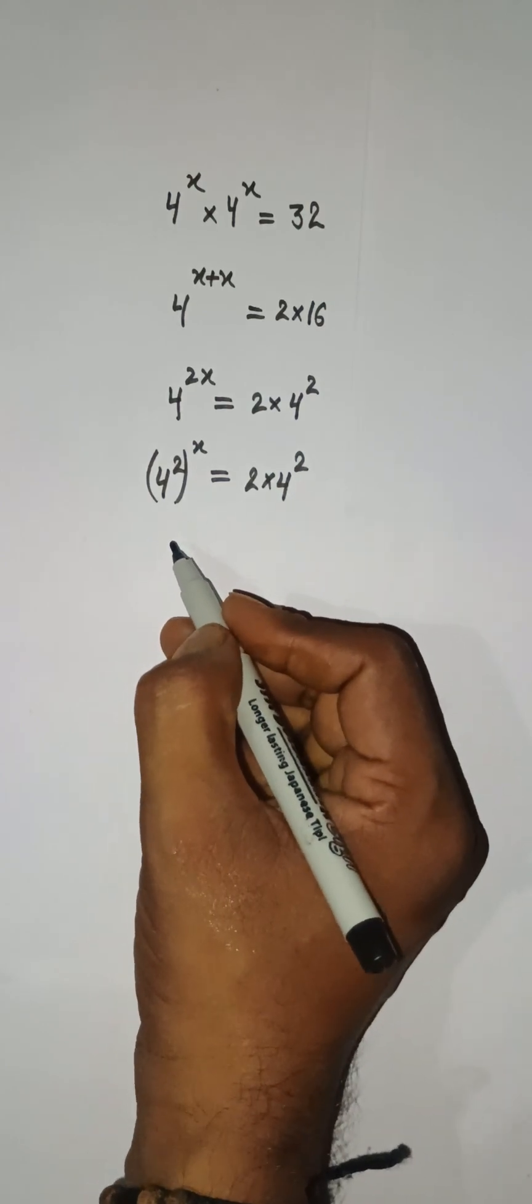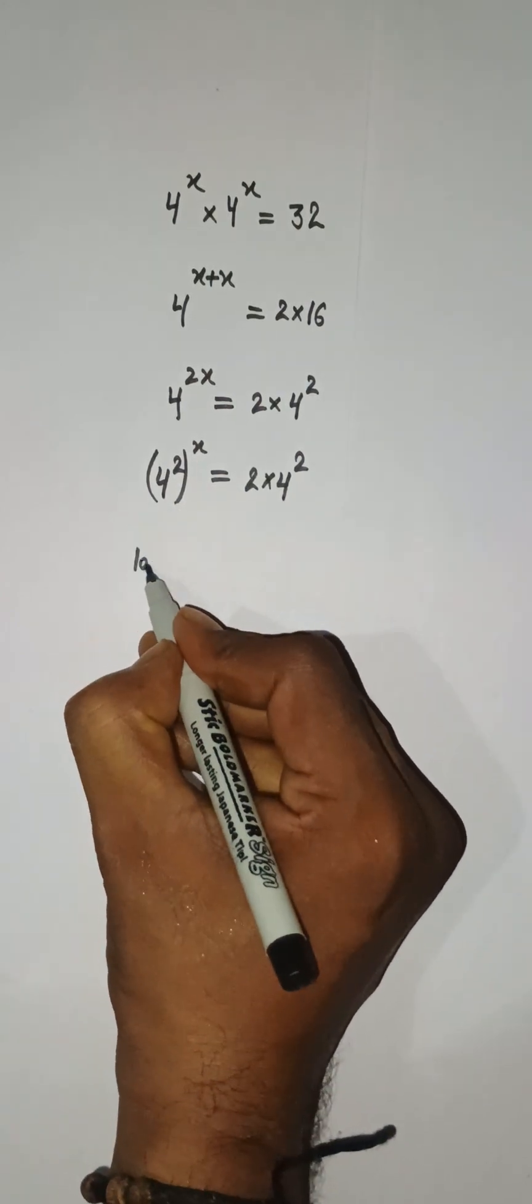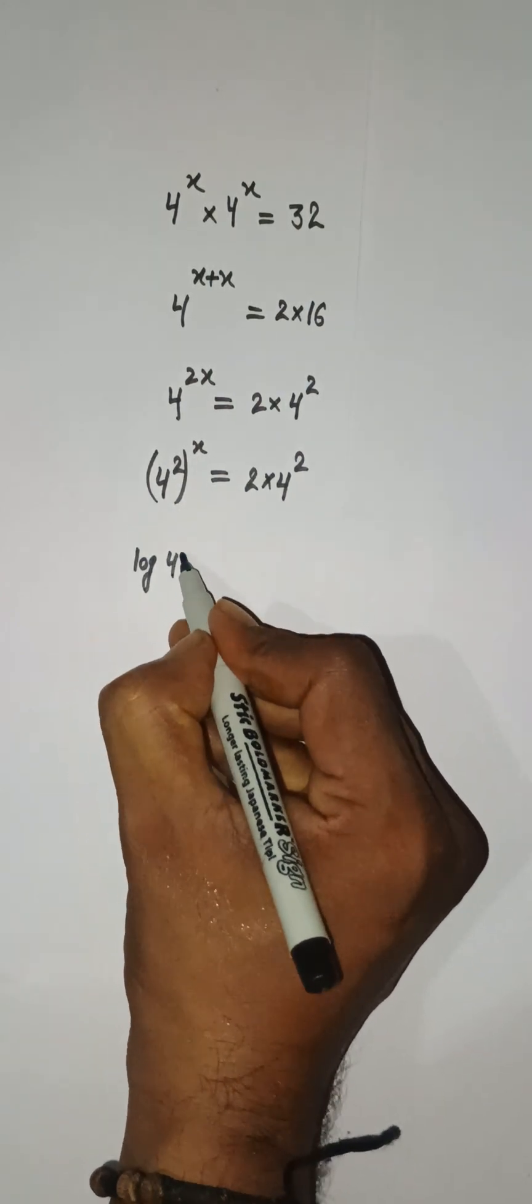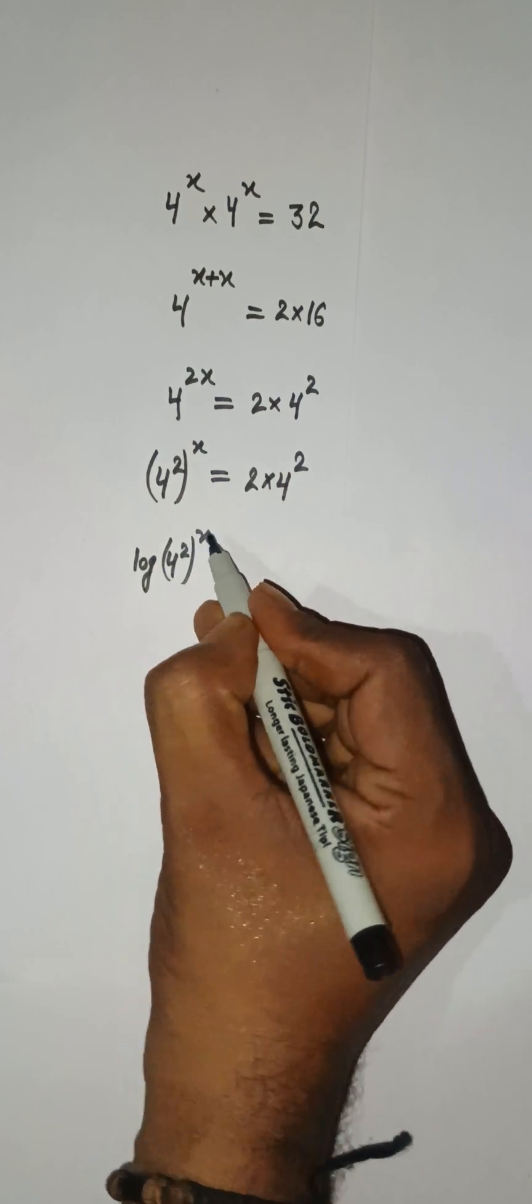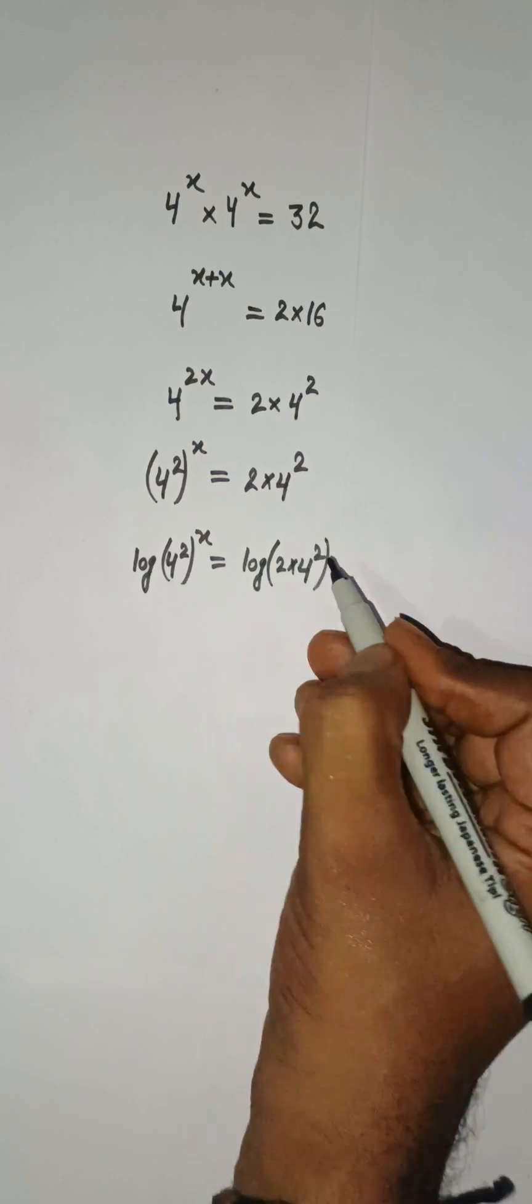So what I can do, I can take log on both sides. So I am taking log of 4 to the power 2 and power x. Here we have log of 2 multiply 4 to the power 2.